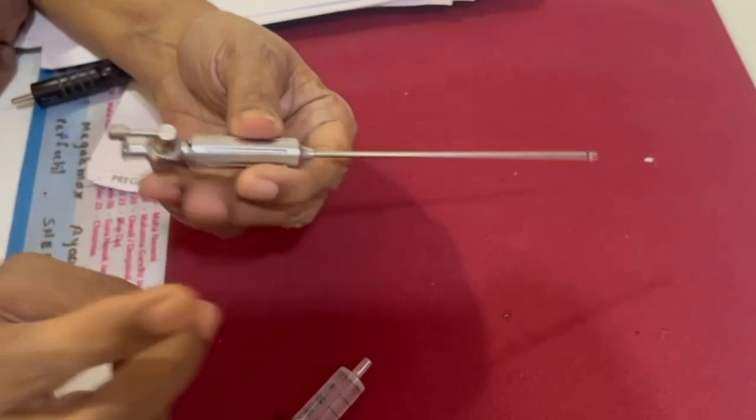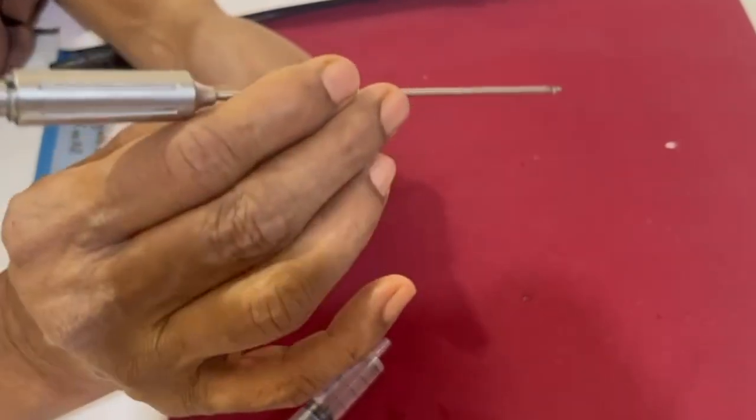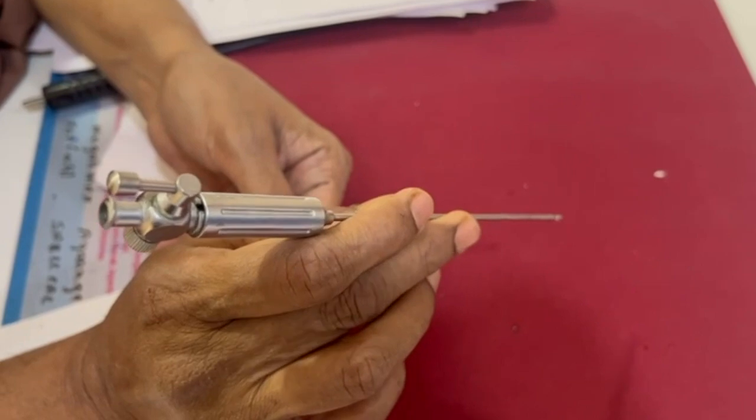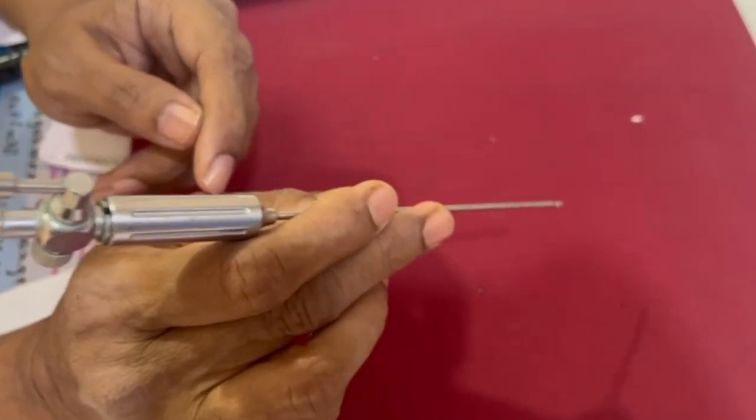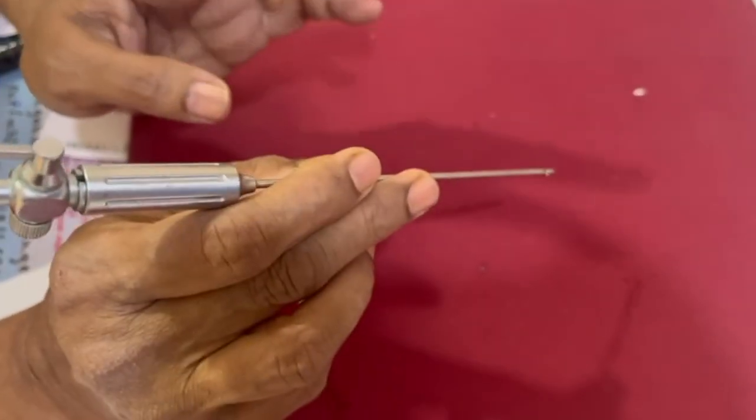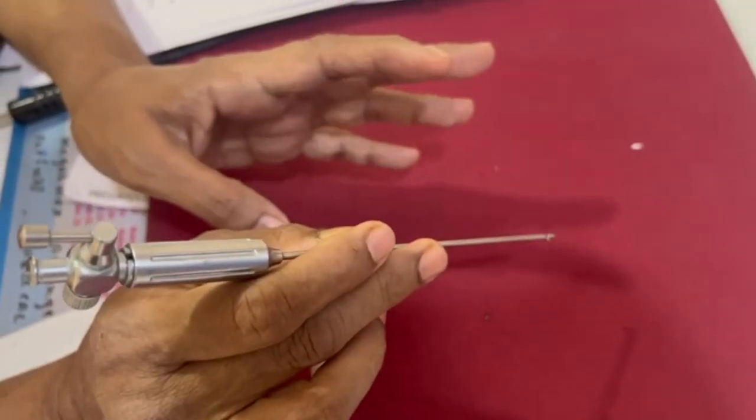There is a double click test. When we pierce the rectus sheath we appreciate one click, and the second click we appreciate when we pierce the peritoneum. That is called the double click test.